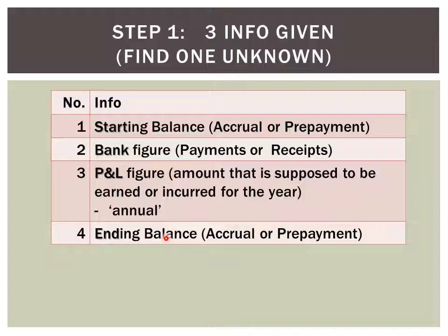So remember these four items: starting balance, bank figure, P&L figure, and the ending balance. One of them will be unknown — usually either two, three, or four will be the unknown, while one is usually given.